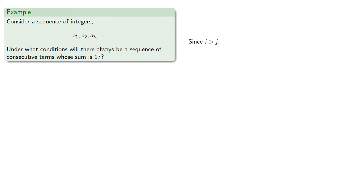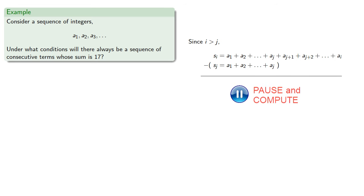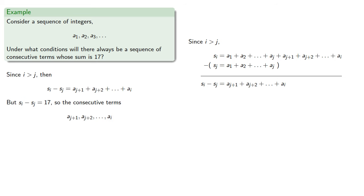And since i is greater than j, then i includes all the terms up to j and then some more. And if we subtract sj, then we get... But since the difference is 17, the consecutive terms sum to 17.